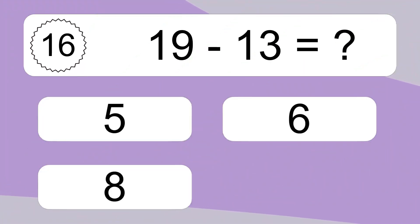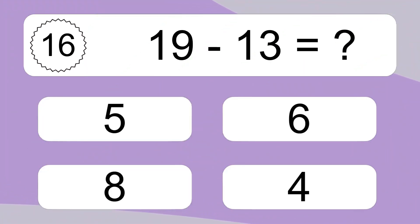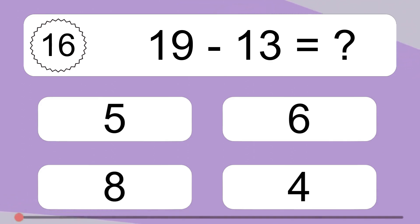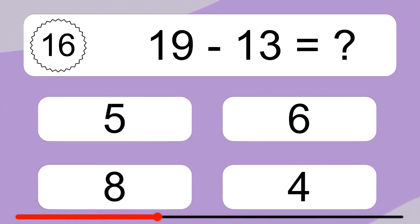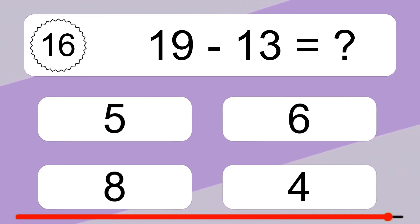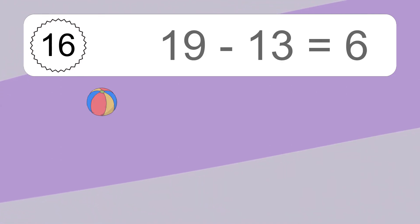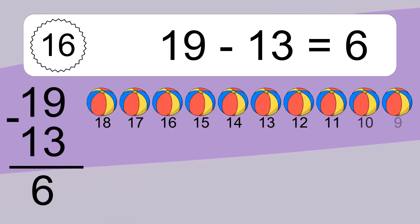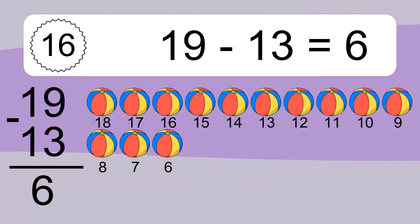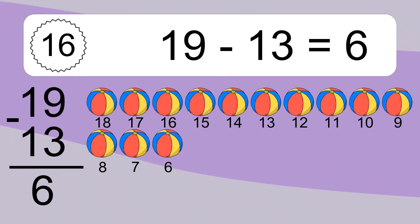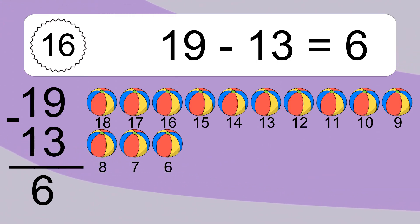19 minus 13 equals what? 19 minus 13 equals 6. Let's count it: 18, 17, 16, 15, 14, 13, 12, 11, 10, 9, 8, 7, 6.